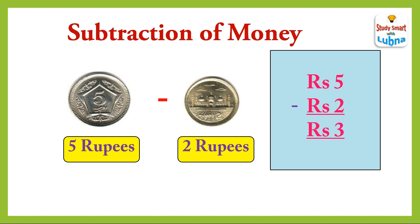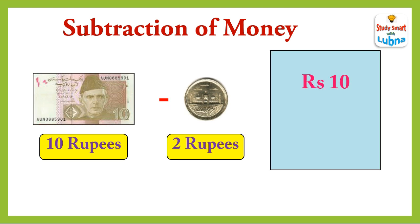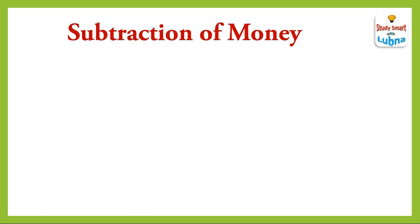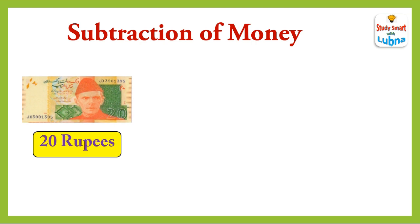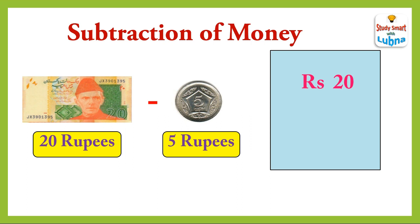Five rupees coin minus two rupees coin — when we subtract rupees two coin from rupees five coin, we will get rupees three. Ten rupees note minus two rupees coin — when we subtract rupees two from rupees ten, we will get rupees eight.